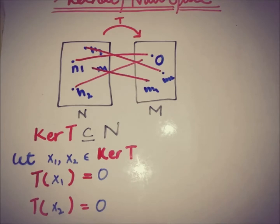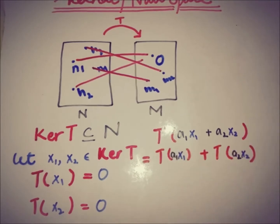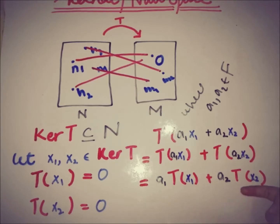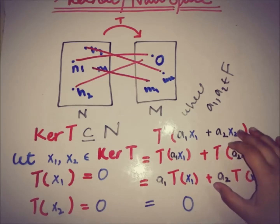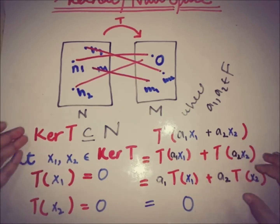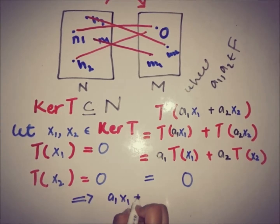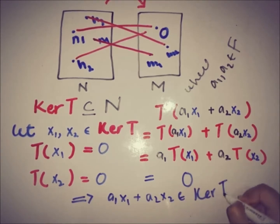For any two scalars a1 and a2 from the field, we look at T(a1·x1 + a2·x2). Because T is a linear operator, this equals a1·T(x1) + a2·T(x2). Since T(x1) = 0, a1 times zero equals zero, and T(x2) = 0, so we get zero plus zero, which is zero. Therefore a1·x1 + a2·x2 maps to zero, so it is also an element of ker(T).